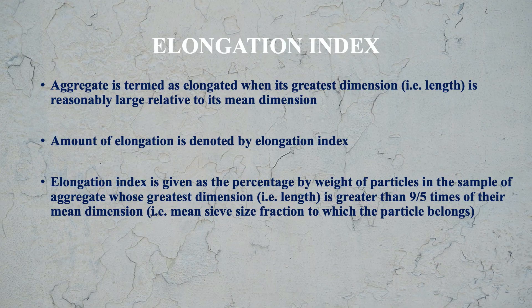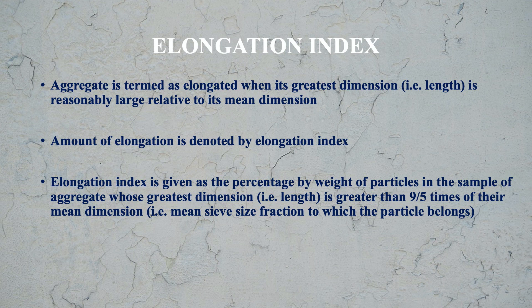Now the Elongation Index. An aggregate is termed as elongated when its greatest dimension — that is the length — is reasonably large relative to its mean dimension. In Flakiness Index we were taking the least dimension; here we are taking the greatest dimension. The Elongation Index is given as the percentage by weight of particles in the sample whose greatest dimension is greater than 9/5 times their mean sieve size fraction.